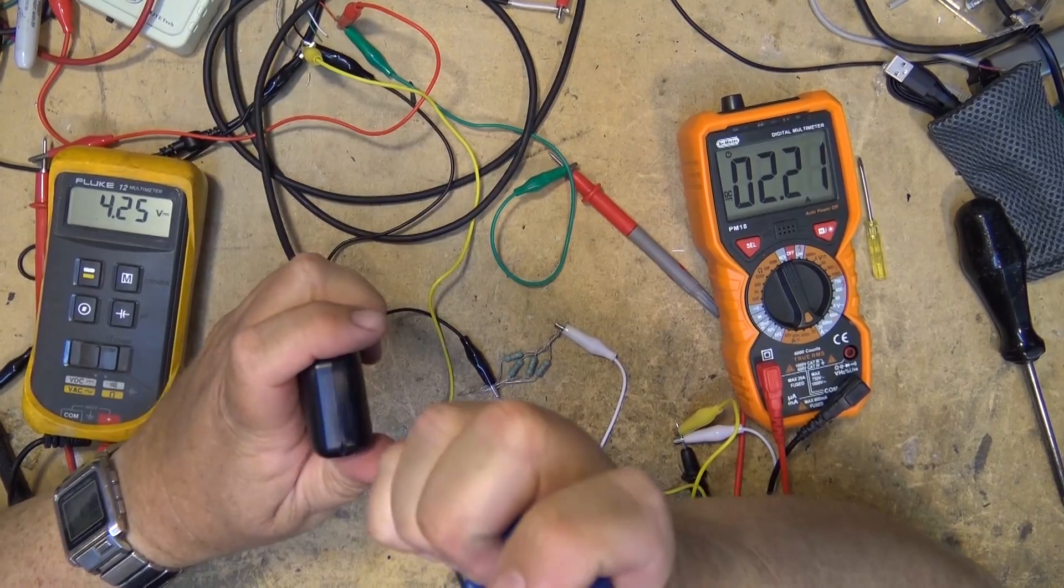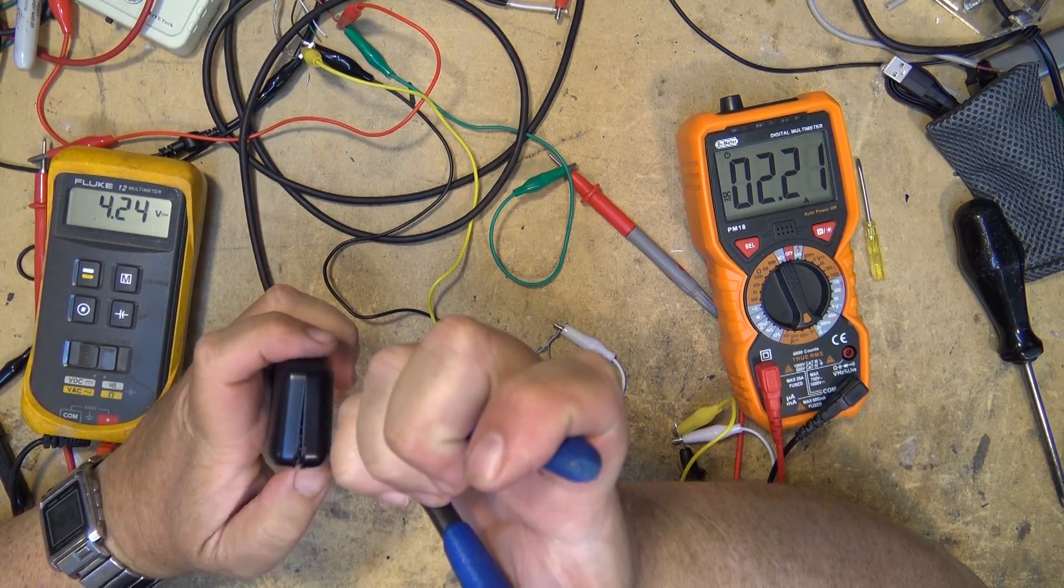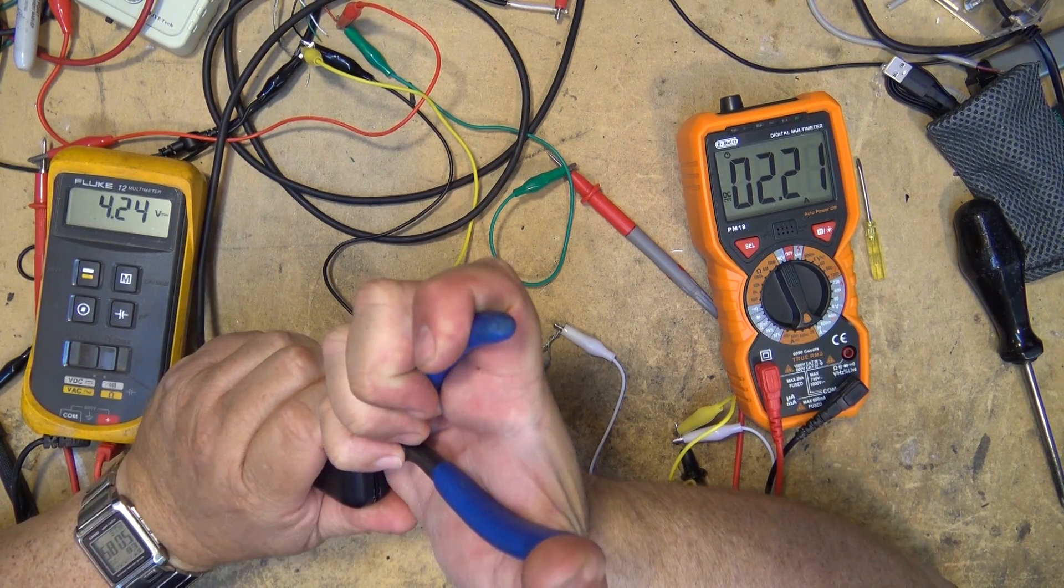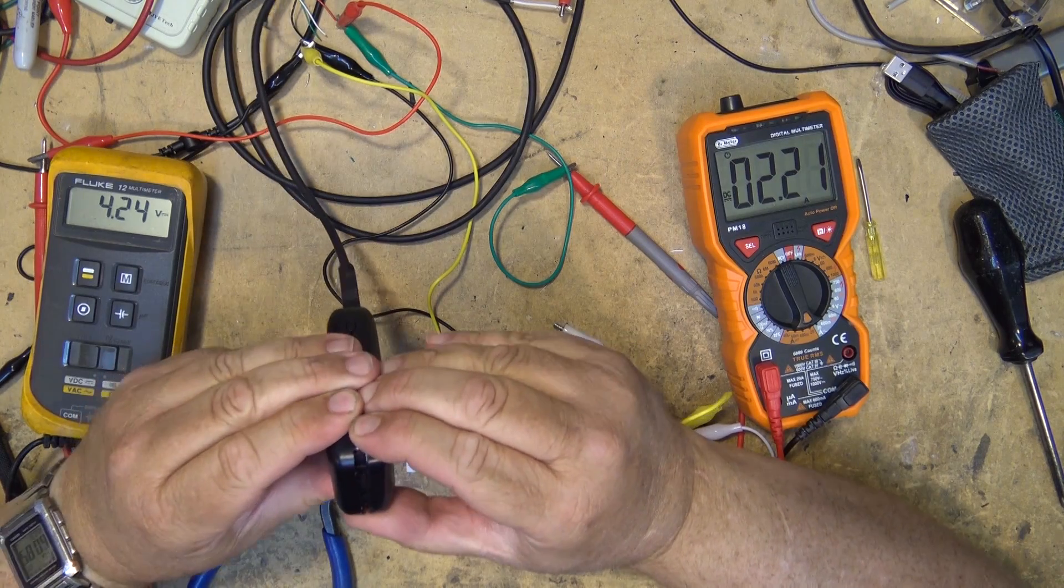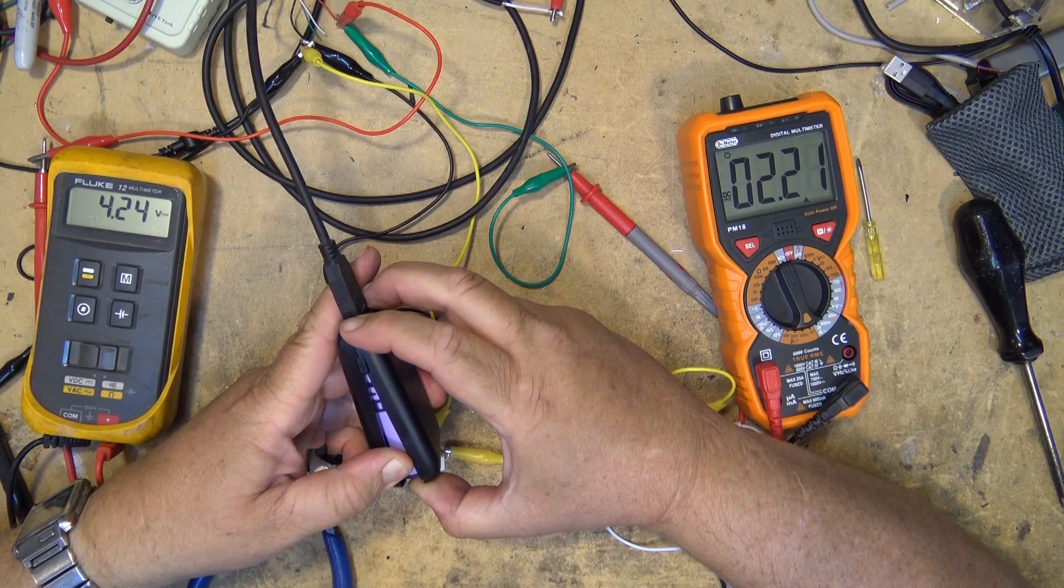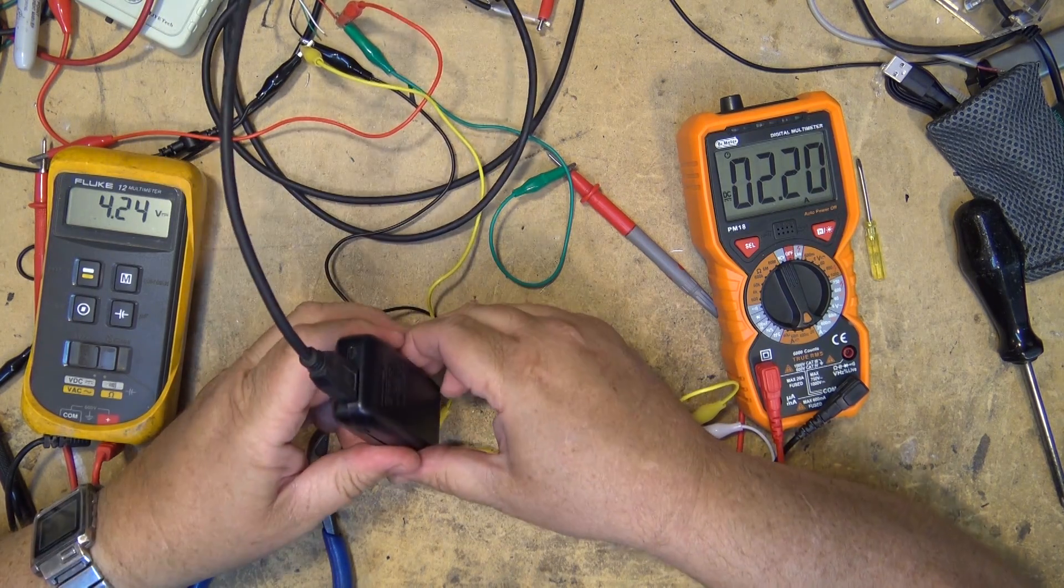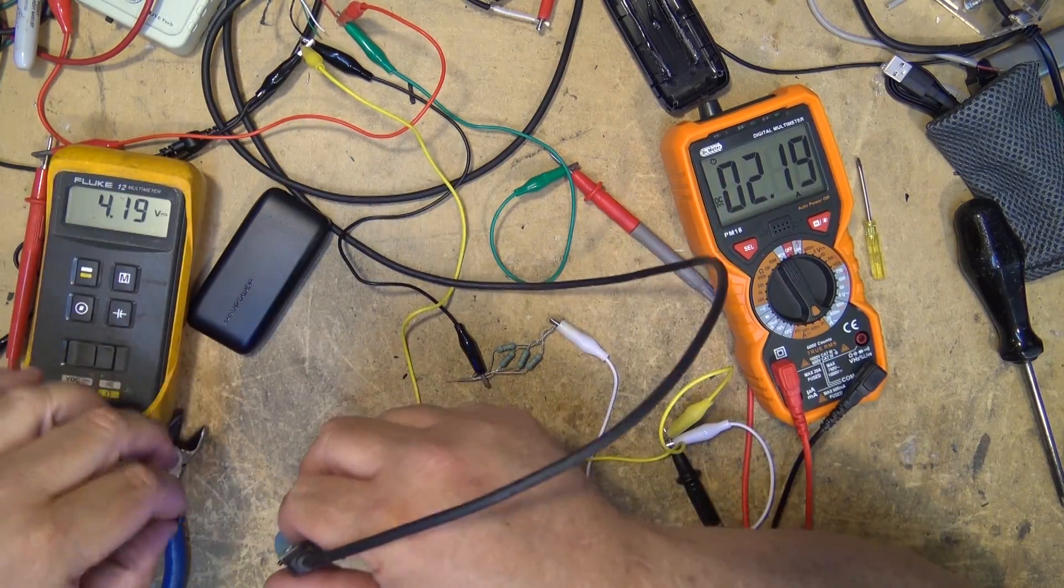I think the best way to open this is probably side cutters into the corner. There we go, it's opening up. It's just held together with little plastic clips, so once we spring them open we should be able to pop this thing right apart. There we have the unit apart.